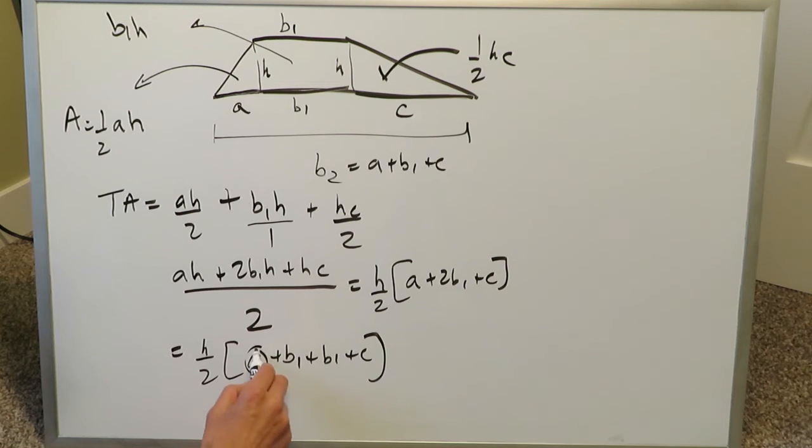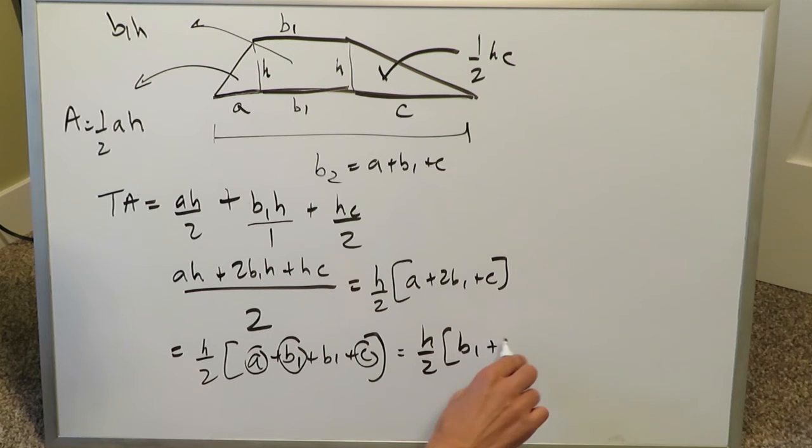You can take out this a, this b1, and this c and substitute them for a b2. You have h over 2, and then you have a b1, which is this lone b1, and then these three comprising to give you a b2, and this geometry challenge is solved.